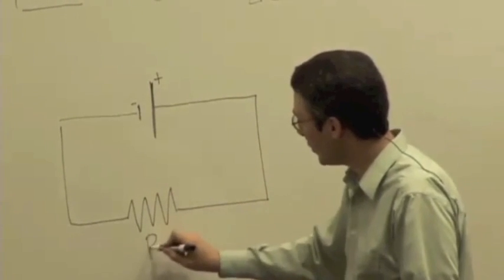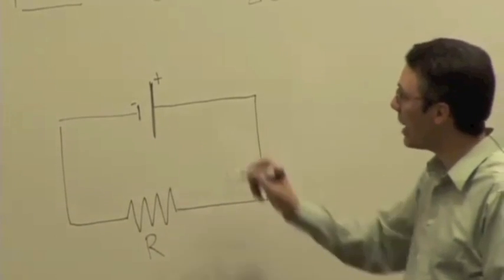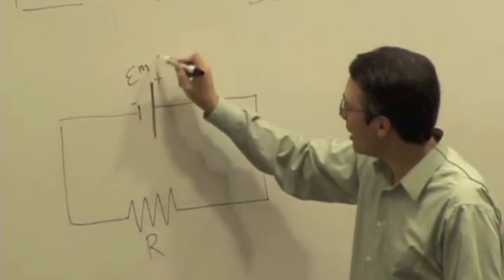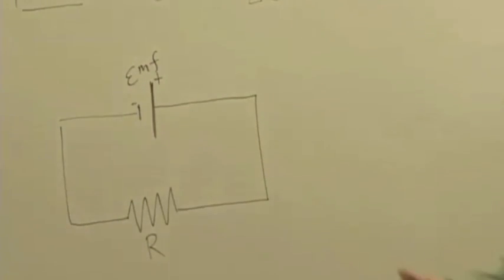And so this has some resistance R, which we talked about last time. And this battery has some EMF. So you can think of it such, for instance, a battery connected to a light bulb, some thin filament that's going to cause a large electric field inside the filament and a large potential difference. And so there's going to be energy radiated away, right?